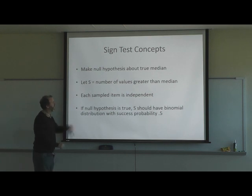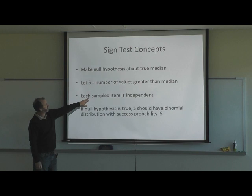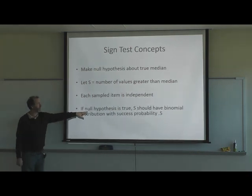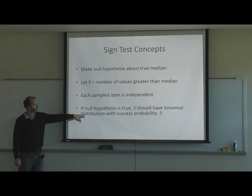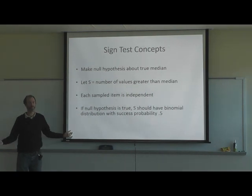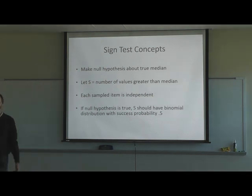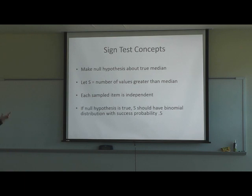S equals the number of values greater than the median, and each sample item is independent. If the null hypothesis is true, S should have a binomial distribution with a success probability of 0.5. This is like flipping a coin — it's either going to be heads or tails, just like with this test it's positive or negative.